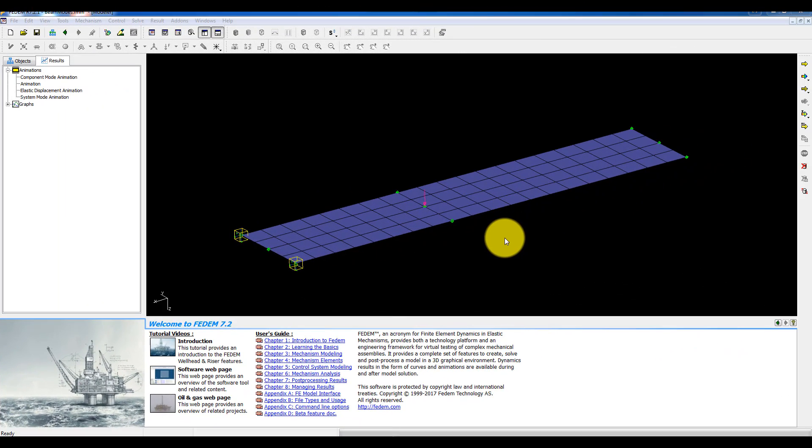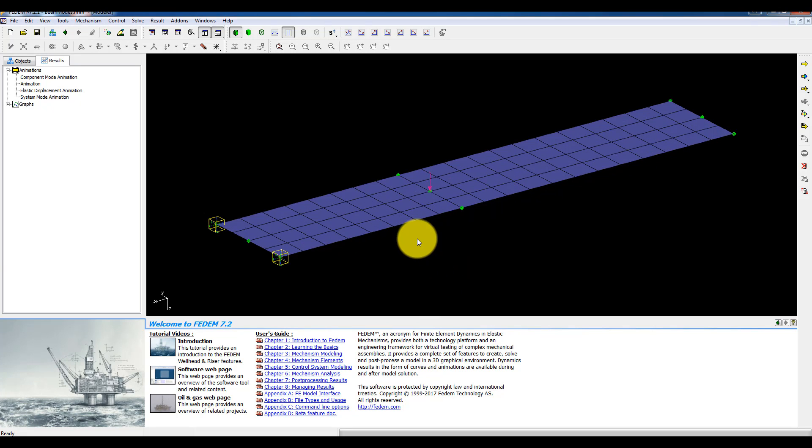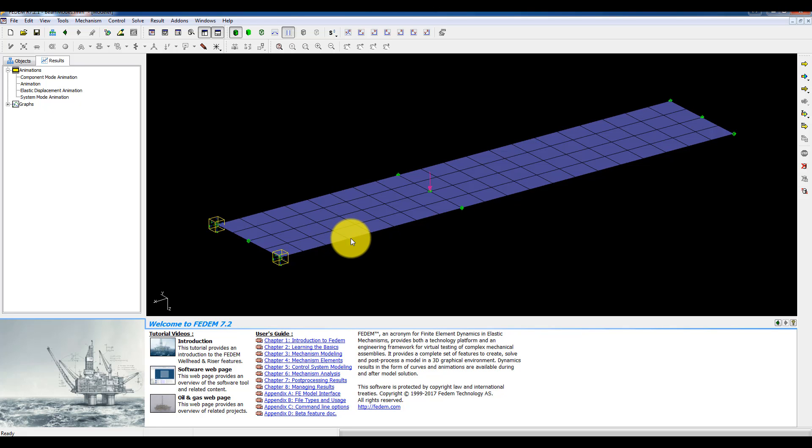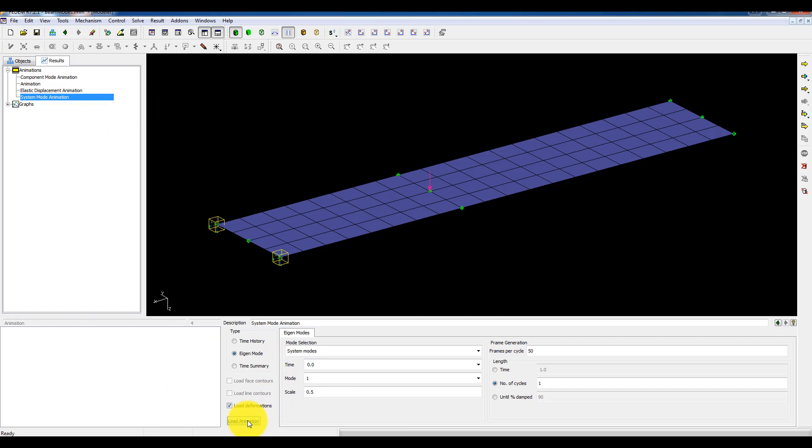Here you see the FEDEM model of a springboard. It has only one component, so it's not an assembly. Let's check here. We see that I have applied no mass proportional and stiffness proportional damping. Before I do so, I want to check the eigenmodes of this system. So I can go to the system mode animation and I can load mode number one.